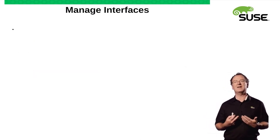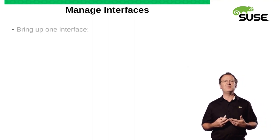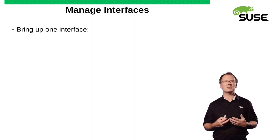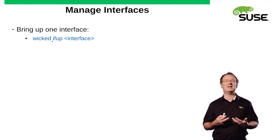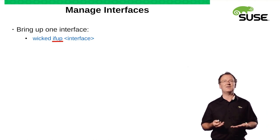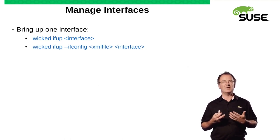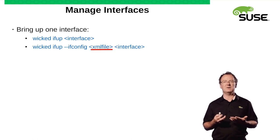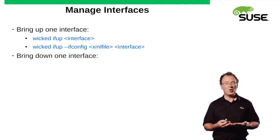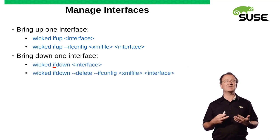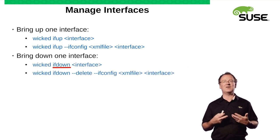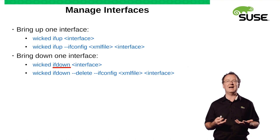So now let's have a look at managing interfaces. To bring up one interface, we can just run wicked ifup and the interface name. We can also bring up an interface and read the content of the configuration from an XML file if we want to. And we can also bring down one interface: wicked ifdown eth0, for example.